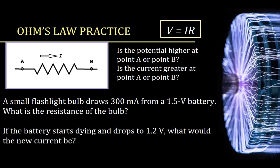Looking at this diagram, we can practice with Ohm's law. Is the potential higher at point A or at point B? Is the current greater at point A or at point B? Remember: current should be the same in a single loop of a circuit. The potential should be greater at A, since current I is flowing from A to B. If a small flashlight bulb draws 300 milliamps from a 1.5-volt battery, what is the resistance of the bulb? Pause the video here to give yourself a chance to calculate it using Ohm's law.